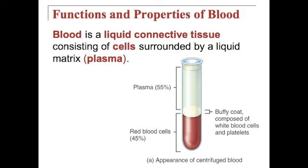This figure also shows the appearance of centrifuged blood. A centrifuge is a round device with pockets for vials or tubes. When it spins very fast, gravity pulls the heavier objects down toward the bottom of the tube, and the lighter objects separate and move closer to the top. That is how we see those three components of the blood and their concentrations separated out.